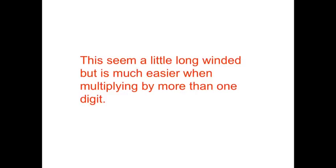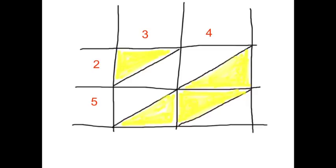This seems a little long-winded, but it's much easier when multiplying by more than one digit. For example, let's take 25 times 34 again.